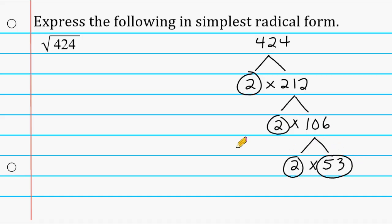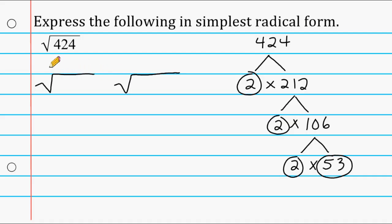Once you have broken your number down into all prime elements, what you should do is go to the side and make two radical symbols. The first radical symbol is for all of your factors that make a perfect square, and the second radical symbol is for all of the factors that do not produce a perfect square. You go to all of your prime numbers and find pairs of prime numbers.